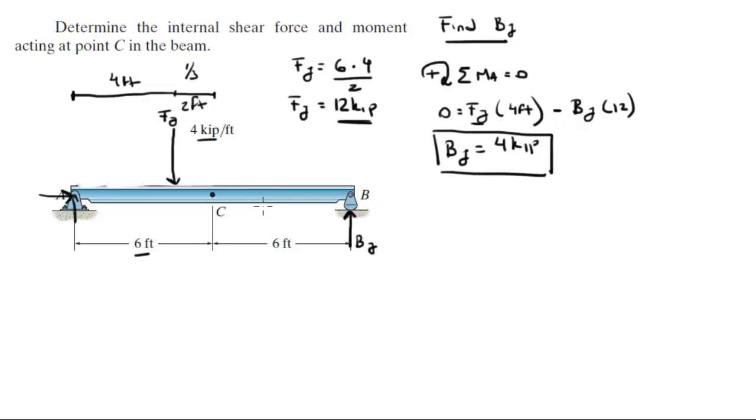Now that we have BY at 4 kilopounds and FY we found at 12 kilopounds, then we're going to use the method of sections and we're going to use this section right here from C to the right. So let me redraw this section.